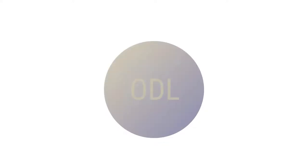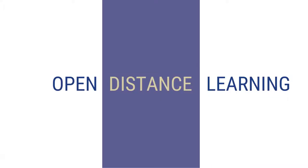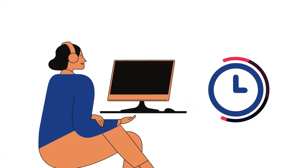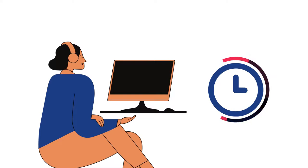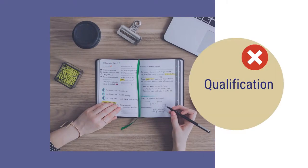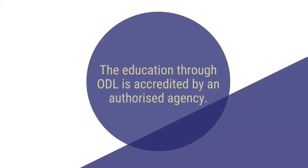Now let us take a look at a few defining factors of ODL. As we know, ODL stands for open and distance learning. The teacher and the learner are separated from each other in time or space, or sometimes both. This characteristic defines the distance term in ODL. One can make self-teaching efforts to educate oneself, but that is different from attaining education through ODL. The self-teaching effort may not be accredited by an authorized agency and hence does not have any proof of qualification. But education through ODL is accredited by an authentic agency.